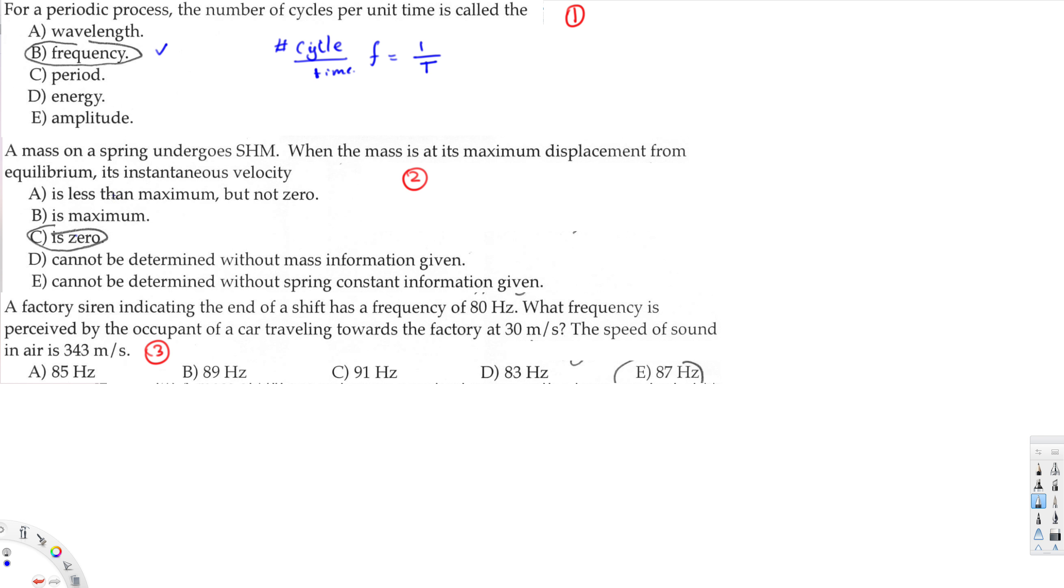The second question is asking: a mass on a spring undergoes simple harmonic motion. When the mass is at its maximum displacement from equilibrium, what is the velocity? So let's put the equation for the displacement first. The equation for displacement is